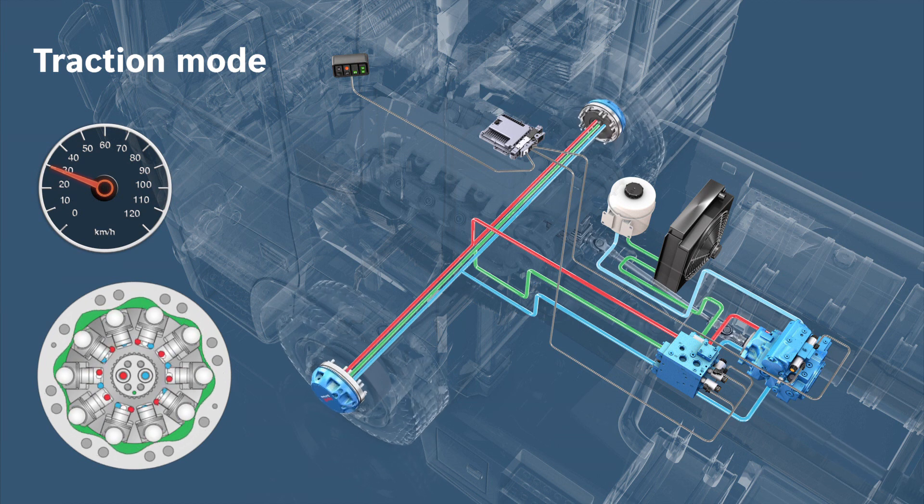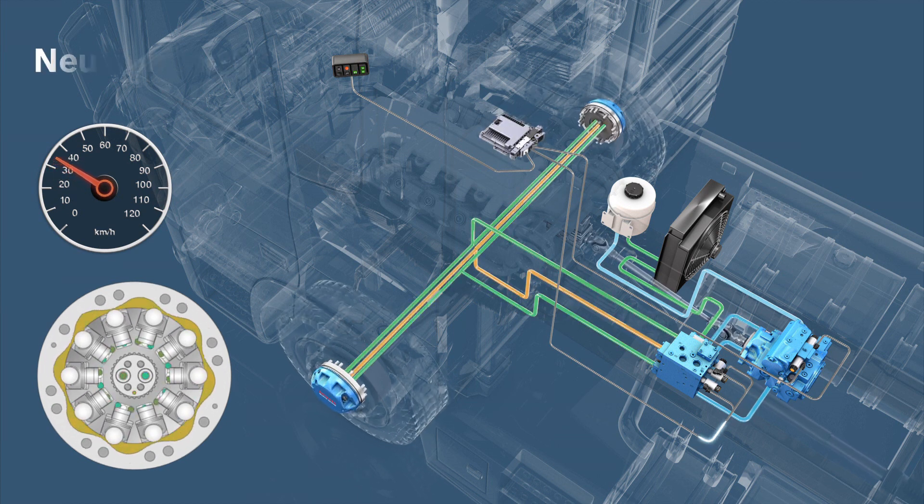At a speed of more than 30 km per hour, the HTA system automatically switches into fuel saving neutral mode.